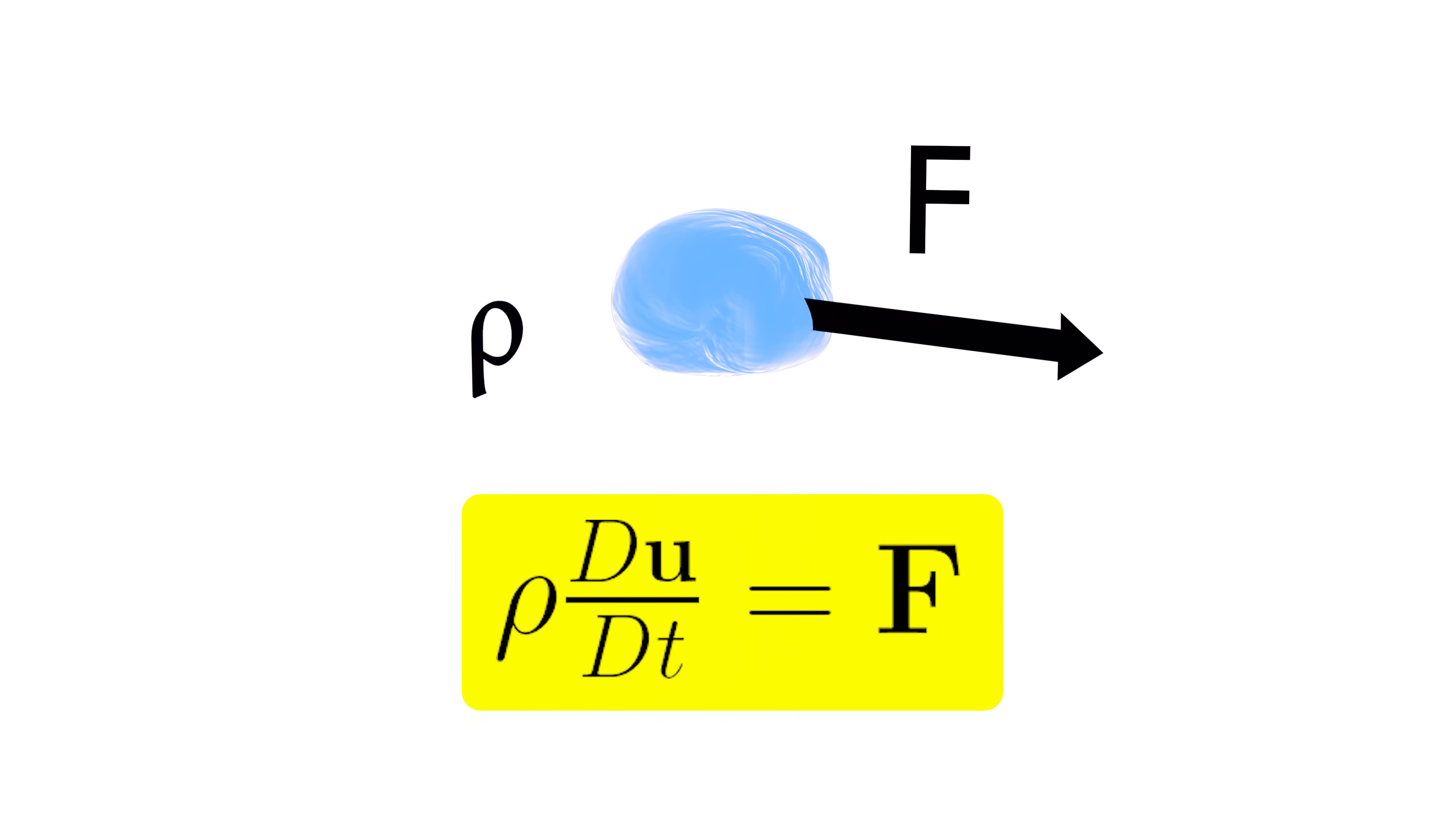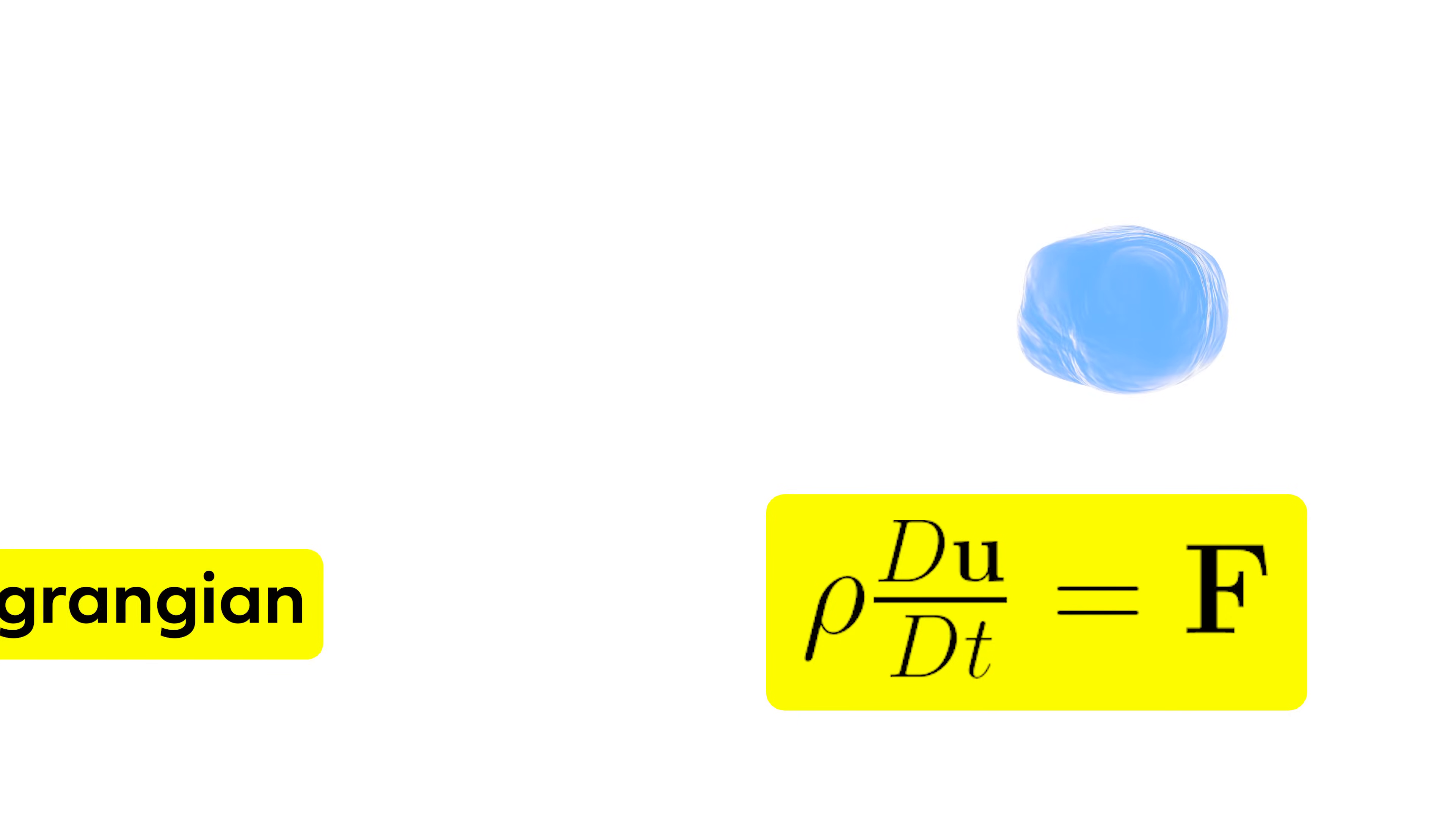For example, you can isolate a section of fluid and consider the forces acting on it, which we can assume to have single values. A section of fluid with density rho, acted on by net force F, will experience an acceleration as per Newton's second law. However, this gives us an acceleration relative to that fluid element, which may itself also be moving and deforming.